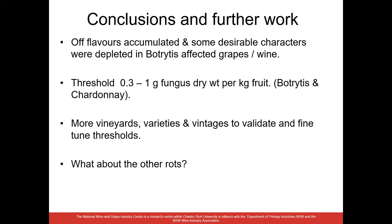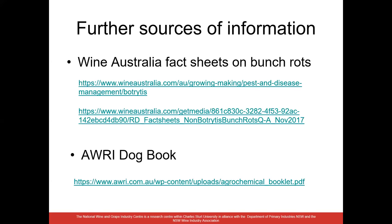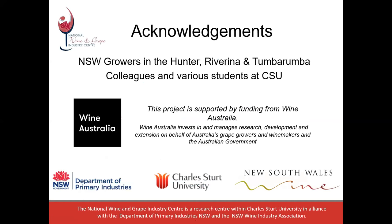A couple of Wine Australia fact sheets on bunch rots may be useful to some people — though they don't deal specifically with thresholds, they give an overview of the different bunch rots. I also always refer people to the AWRI doc book as the definitive guide on which fungicides can be applied to wine grapes in Australia. I'd like to acknowledge the contribution of grape growers in various regions throughout New South Wales — the Hunter, Riverina and Tumbarumba — and colleagues and various students at CSU over the years. Finally, I acknowledge the funding body Wine Australia, without whose support this work would not be possible.